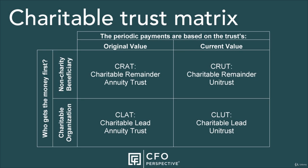Charitable trusts are four mixtures of two sets of options. In this image, I show the two sets of options in a matrix. The first option is down the left side of the matrix — you decide who gets the money first, either a non-charity beneficiary or the charitable organization. The second option is across the top: you decide whether the periodic payment amounts are based on the original value of the trust or its current value. The names of the four types of resulting trusts are in the middle of the matrix.